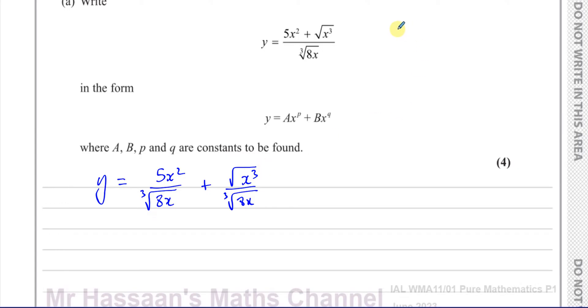I know that the mth root of a to the power of n can be written in index form as a to the power of n over m. The power is the numerator of the fraction, the index, and the root is the denominator. So a to the power of n over m means a to the power of n and the mth root of that.